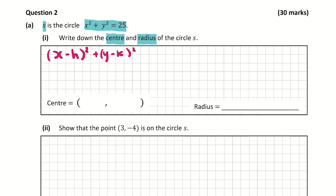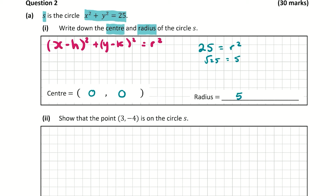As we can see in the circle we're given, it's not x minus anything or y minus anything, so that means it's x minus zero and y minus zero. So the center is (0, 0). The radius: 25 = r², so r = √25 = 5. We have the center at (0, 0) and the radius at 5. That's part one done.